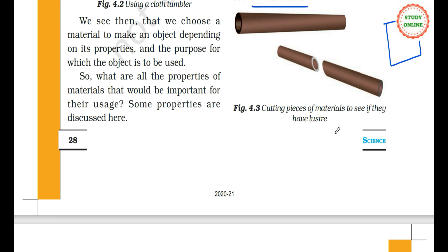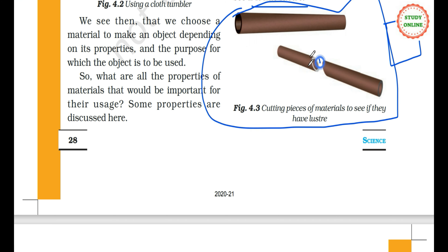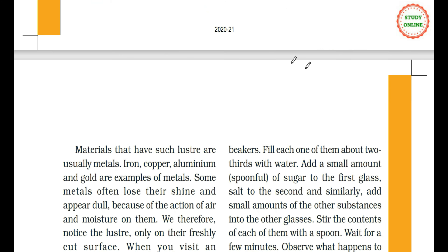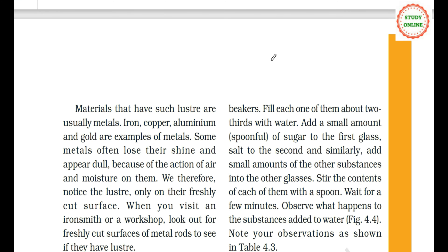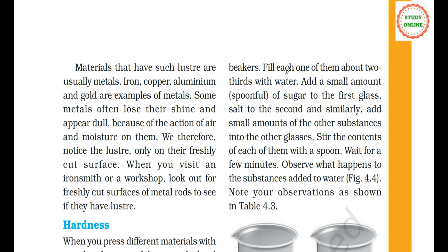In the picture, a pipe is cut to see if we can see lustre — lustre meaning shining. Materials that are shiny or whose freshly cut surfaces are shiny are called lustrous materials, and their shine is called lustre. Materials that have lustre are usually metals. Iron, copper, aluminium and gold are examples of metals.